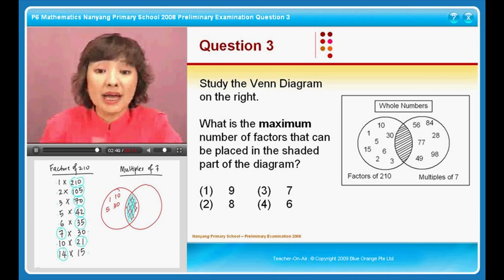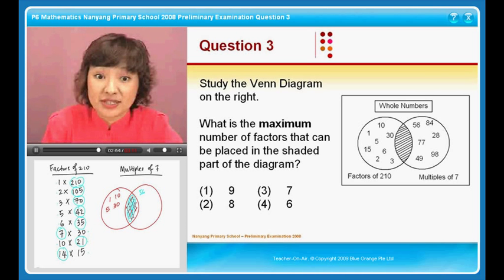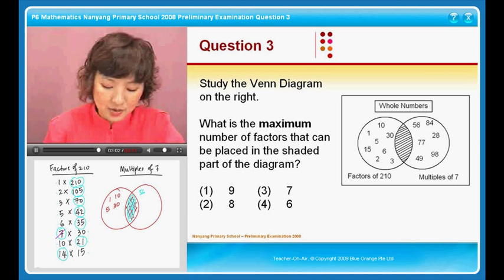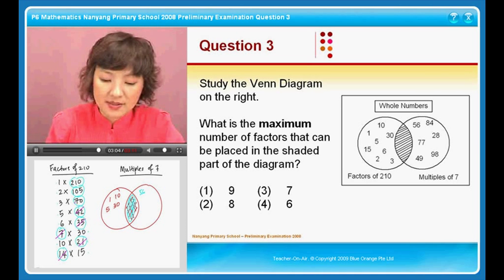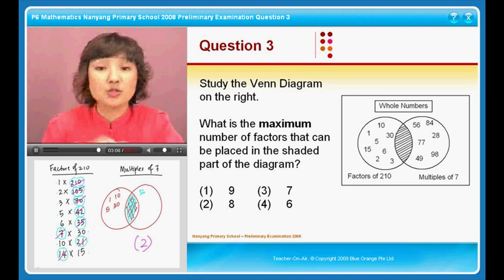All the other numbers, like 56, is also a multiple of 7, but it is not a factor of 210. So the question is, what is the maximum number of factors that can be placed in the shaded part of the diagram? I will have 1, 2, 3, 4, 5, 6, 7, 8. Right? So the answer that I will choose will be option 2.